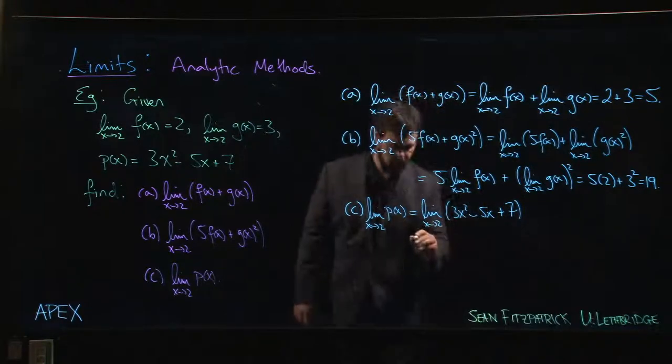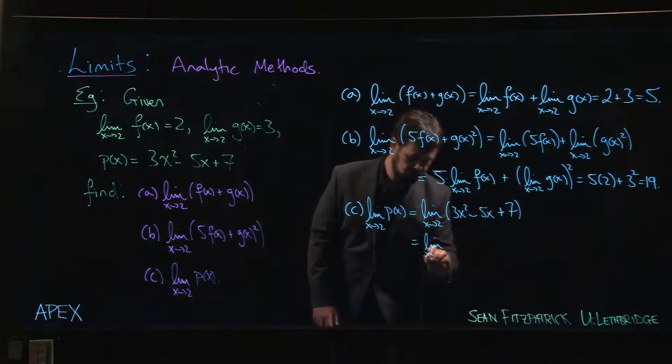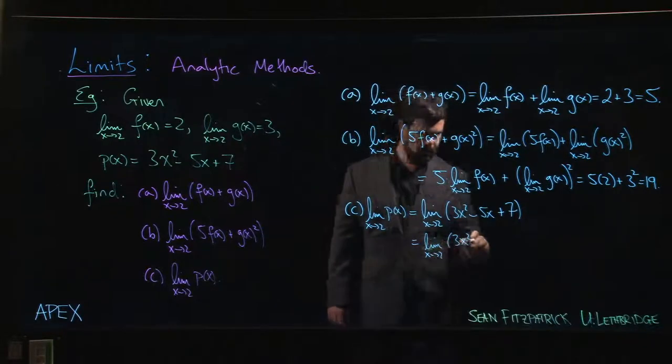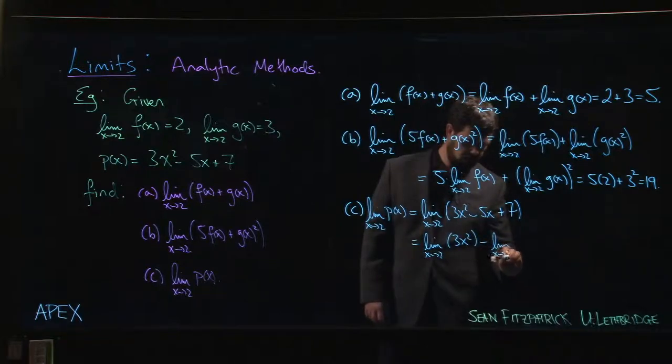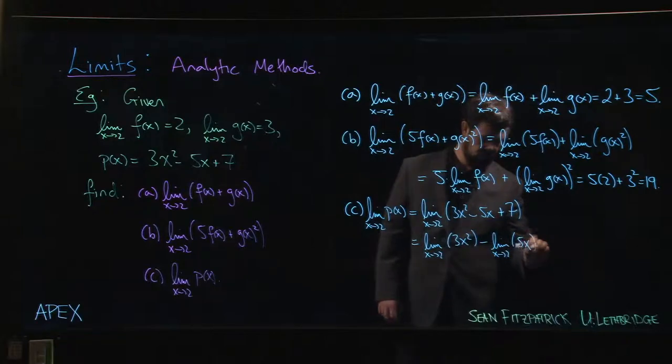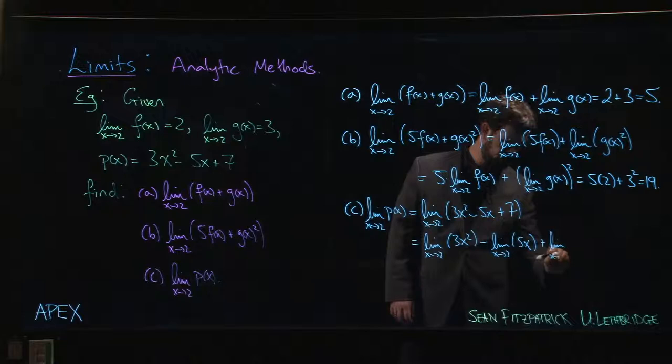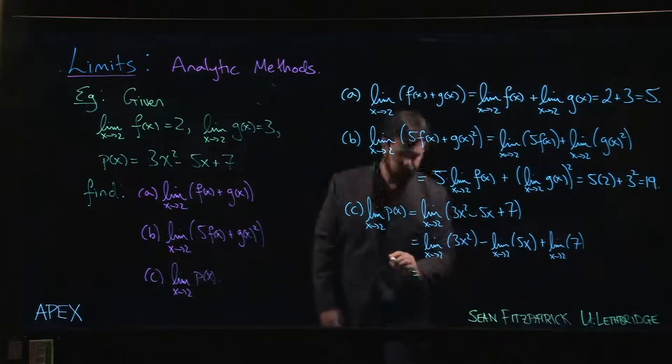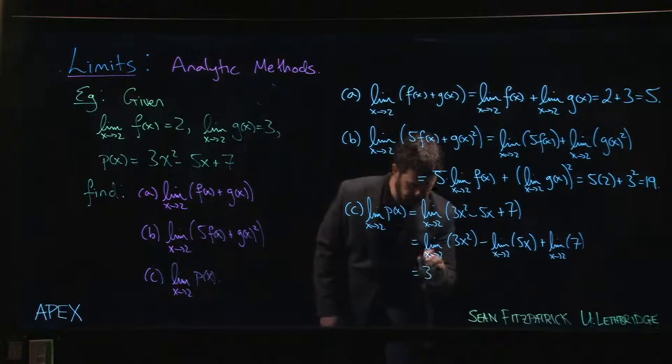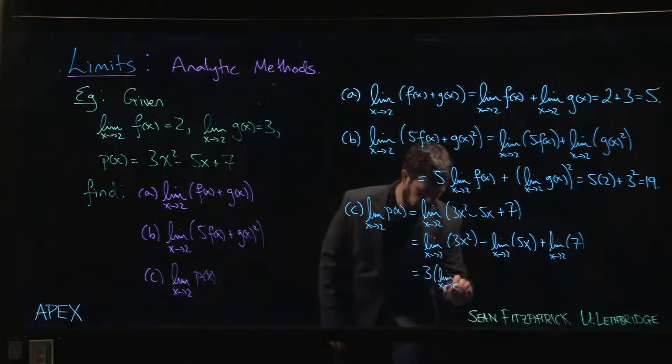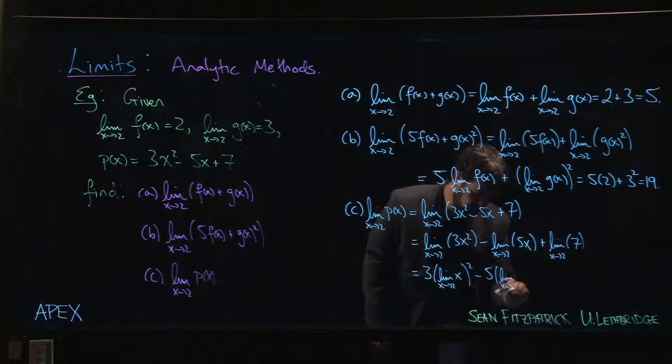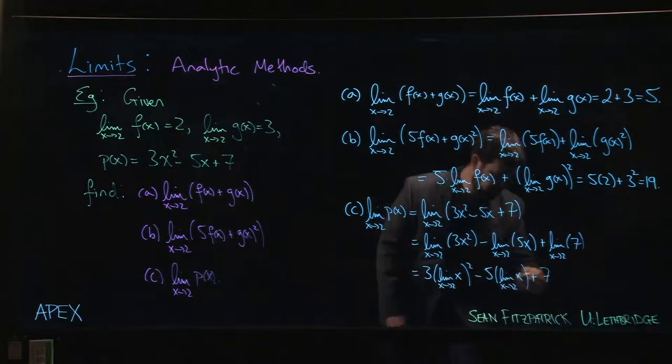So we can do this as the limit as x goes to 2 of 3x² minus the limit as x goes to 2 of 5x plus the limit as x goes to 2 of 7. Then we can bring the constants out. Let's maybe skip one step here: bring the constant out front and then we have a power. So this is 3 times the limit as x goes to 2 of x² minus 5 times the limit as x goes to 2 of x. Of course, the limit of a constant is just that constant.